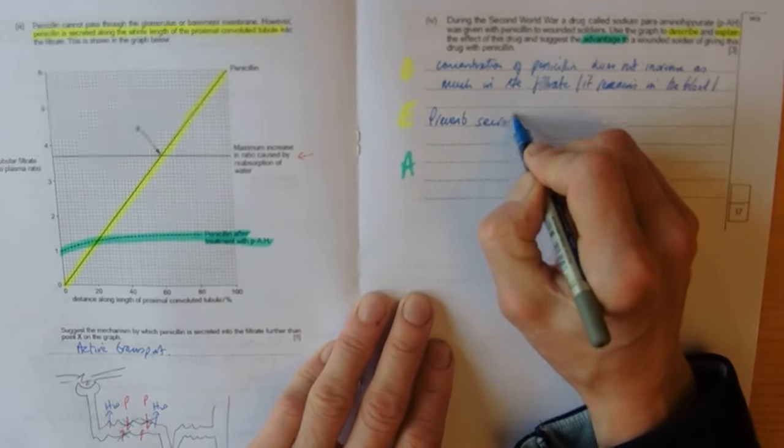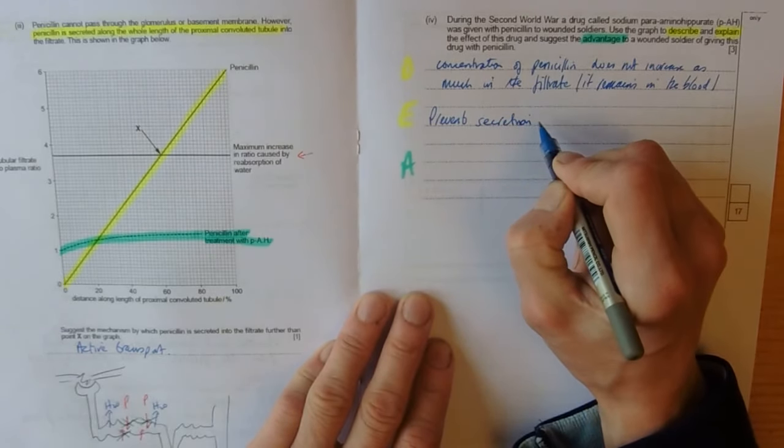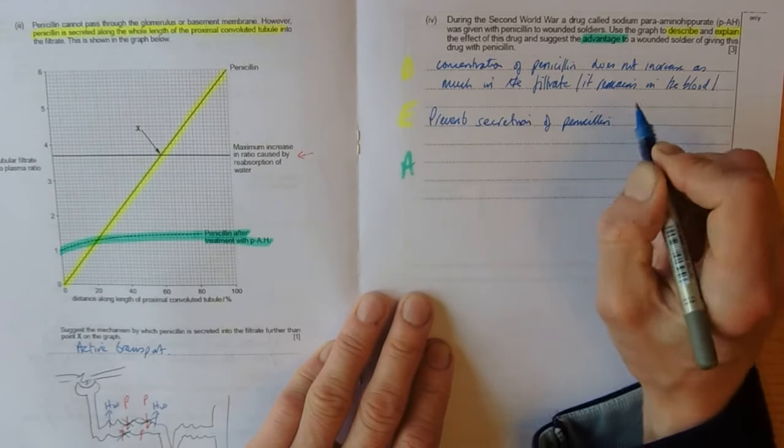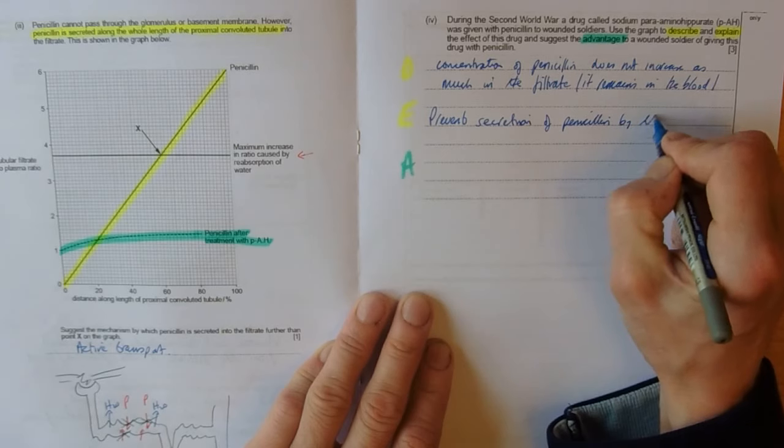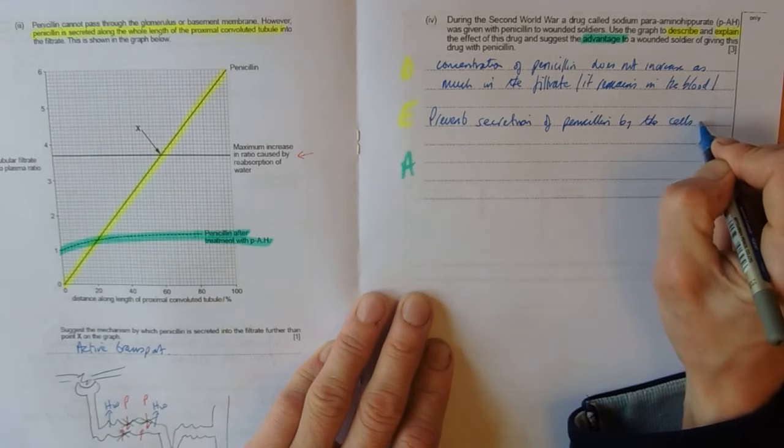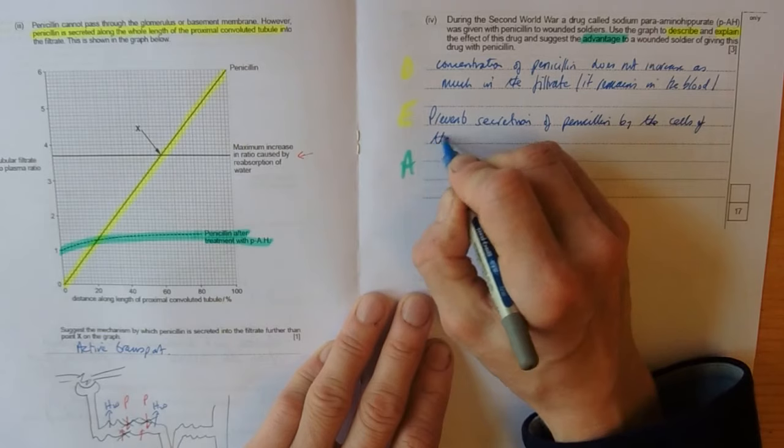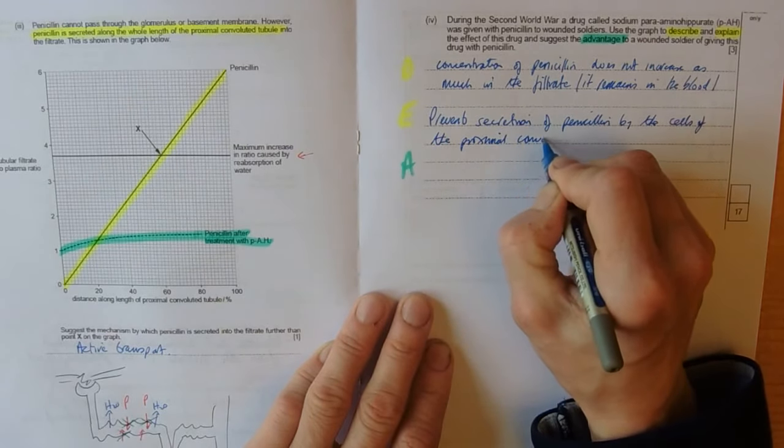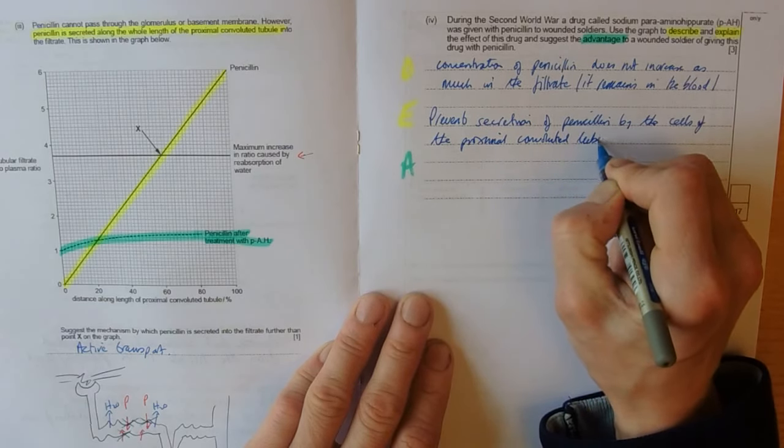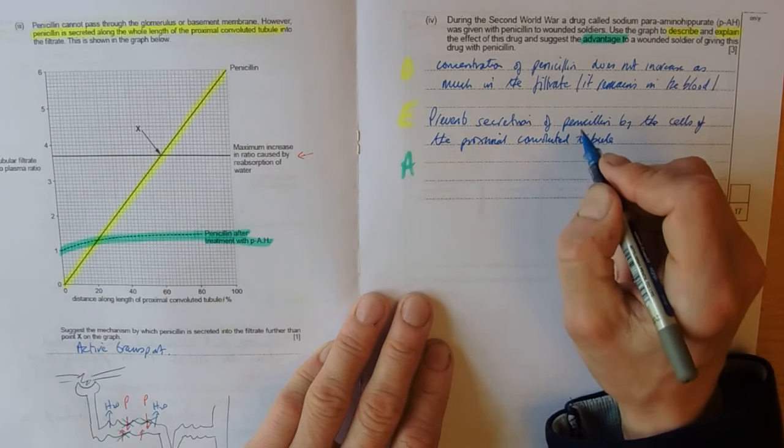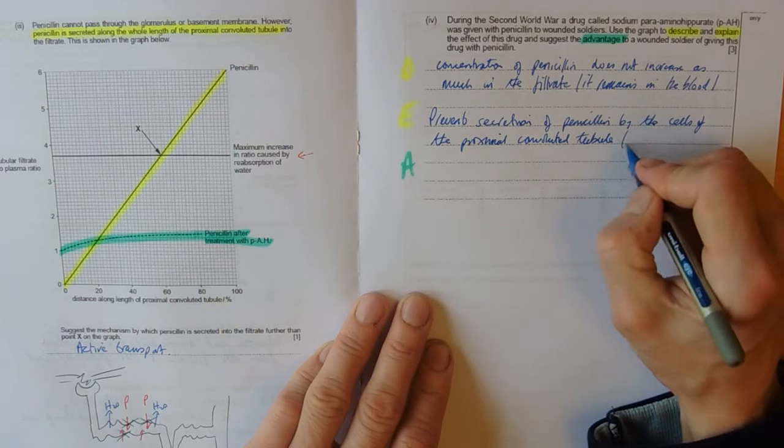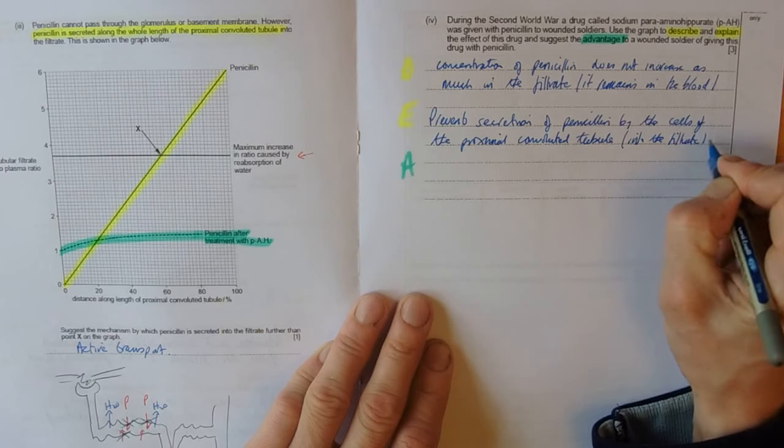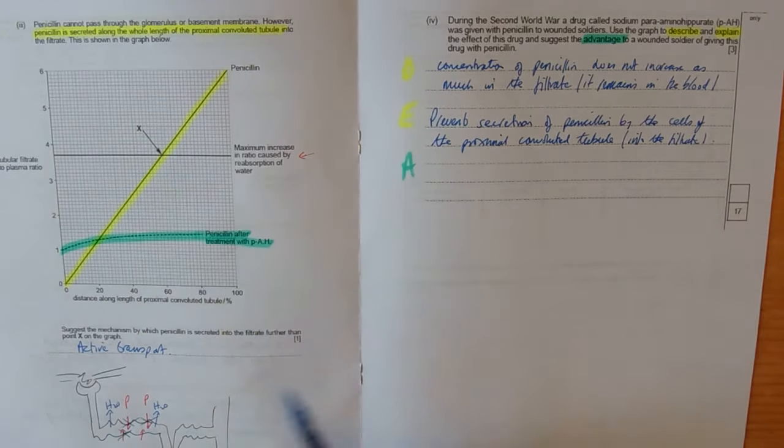So, prevents secretion of penicillin by the cells of the proximal convoluted tubule into the filtrate.